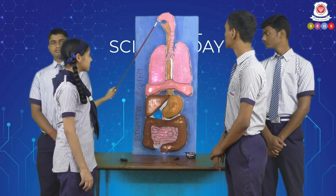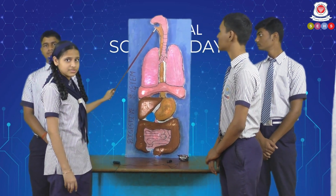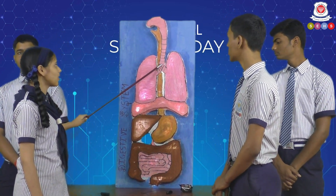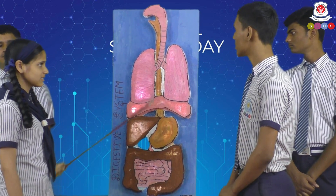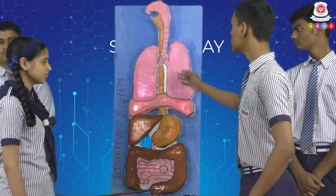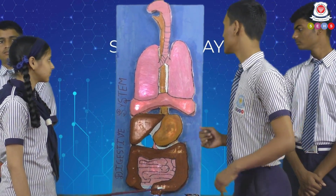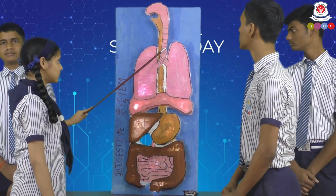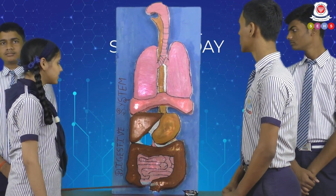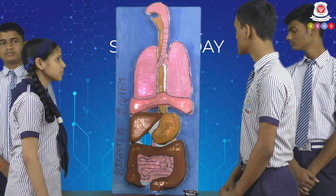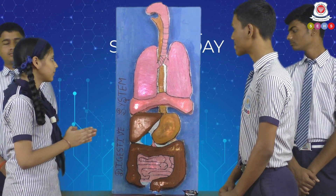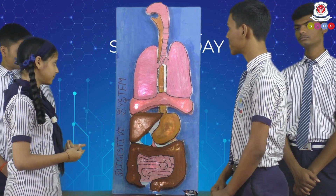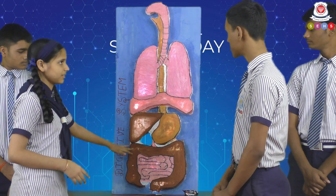Mouth is the beginning of the digestive system. Do you know what this long pipe is called? No, I don't know. Can you explain me please? This long pipe is called as esophagus, which helps the transfer of the food into the stomach.